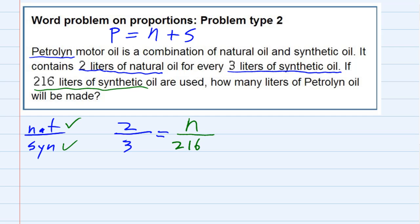So to solve it for n I would first multiply diagonally. 3 times n gives me 3n. And then going in the other direction, 2 times 216 gives me 432.